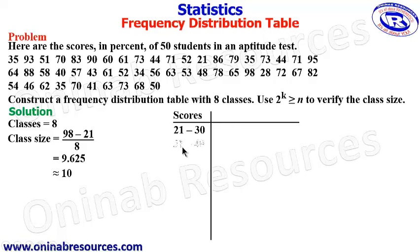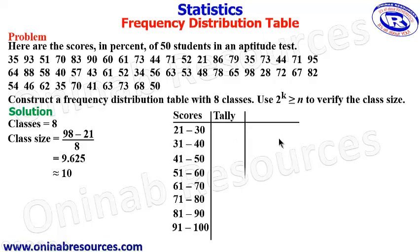The next class will be 31 to 40, then 41 to 50, 51 to 60, 61 to 70, 71 to 80, 81 to 90, and 91 to 100. So we are going to stop at 100 since the scores are based on percent. We then get our tally column and the frequency column.